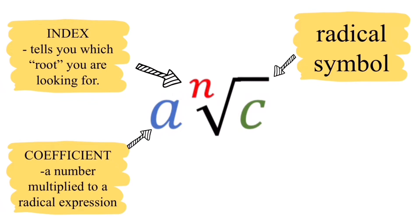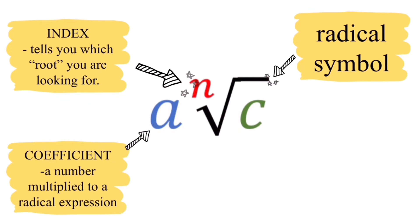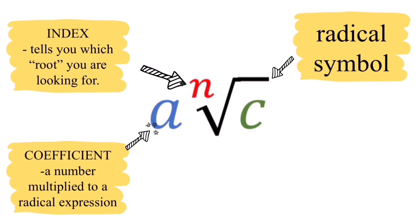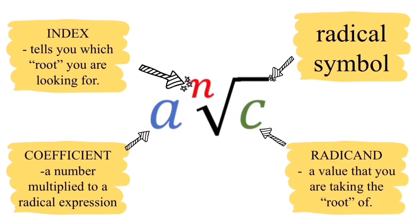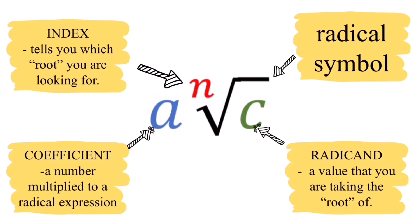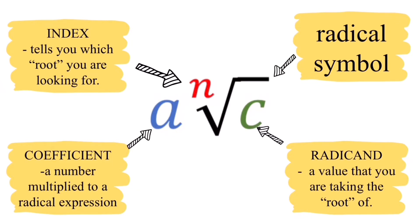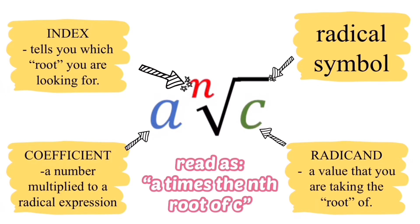Please remember that if the value of the index is not written in there, it means that that invisible number is 2. We also have a letter C and this letter C is named as the radicand. A radicand is the value that you are taking the root of. So this expression that we have here is read as A times the Nth root of C.